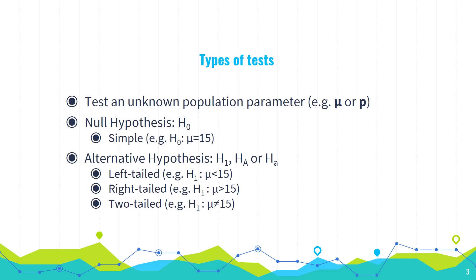Your alternative hypothesis is the way that you encode a claim or a hunch that you may have, or a claim that somebody else is making. If the claim is that the mean is less than 15, your alternative hypothesis is going to be mu is less than 15 — that's called a left-tailed test. You could have a right-tailed test or a two-tailed test. A two-tailed test is where the alternative is purely complementary — we don't have any hunch that the mean is greater than or less than 15, we just think it's different than 15.